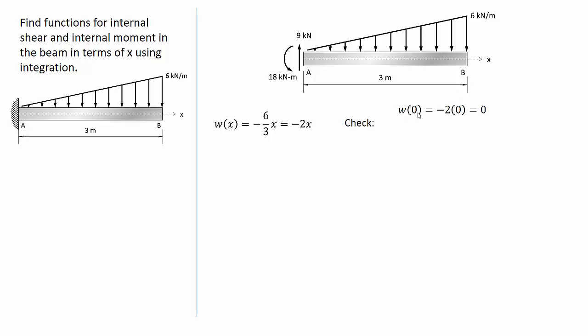When I evaluate the expression at x equals 0, I get 0 for my distributed load value, which is correct. When I evaluate it at x equals 3, I get a value of negative 6, which is also correct for point B.